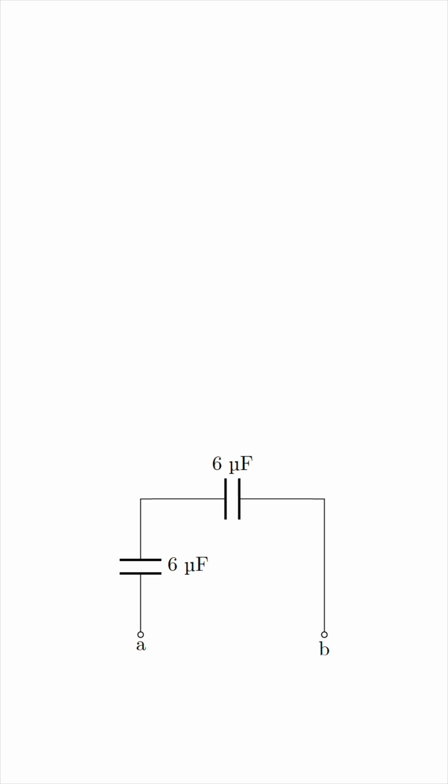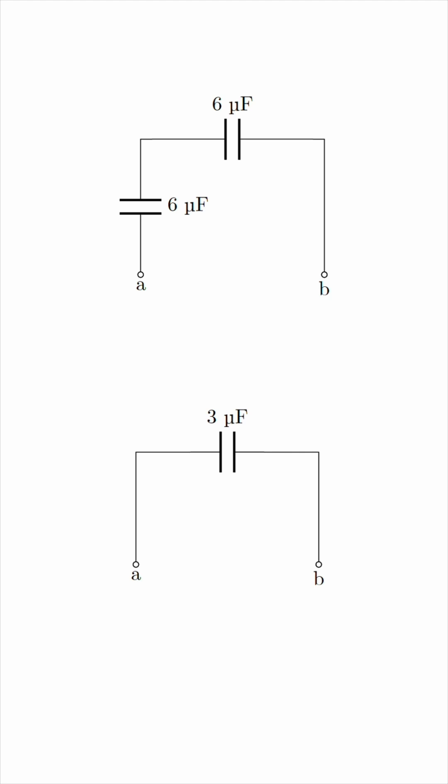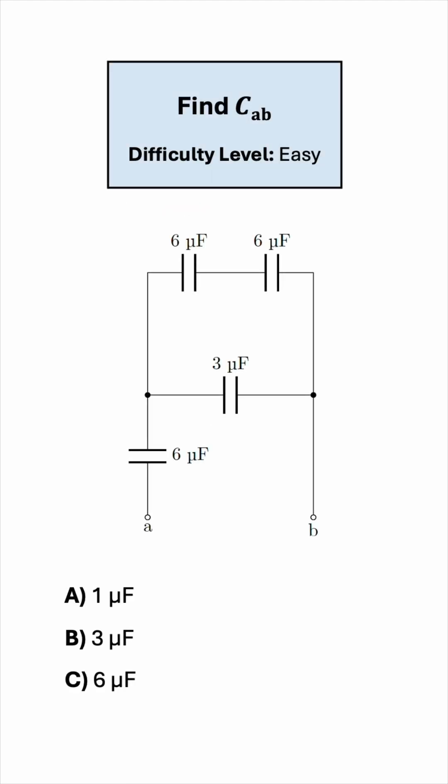And finally, we have those two 6μF capacitors in series. So again, we combine them like parallel resistors, giving us 3μF. So this is the equivalent capacitance between terminals A and B, making the correct answer B.